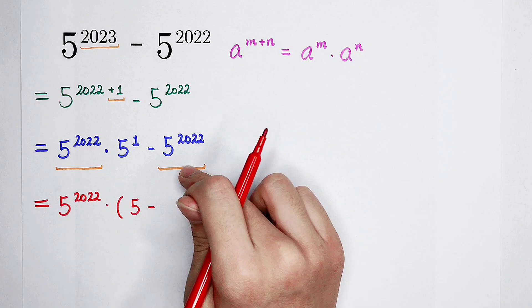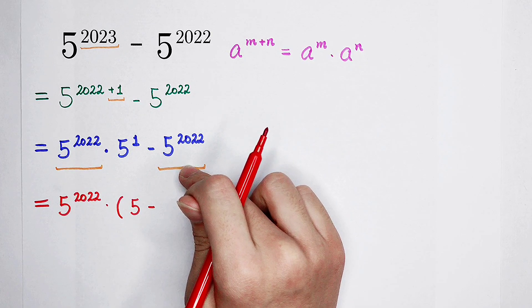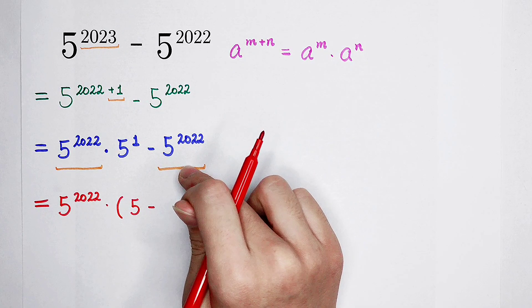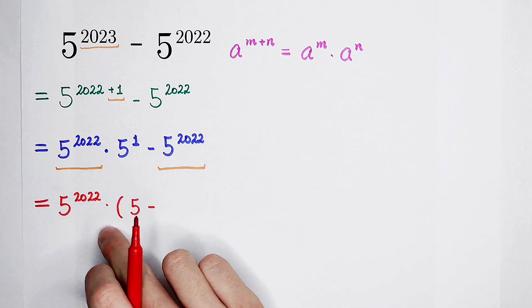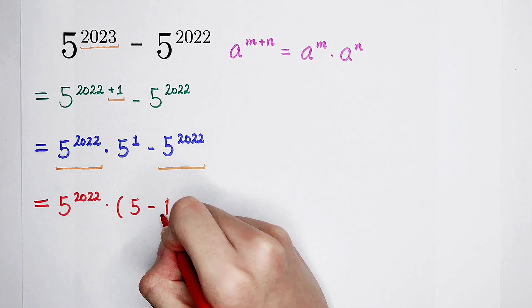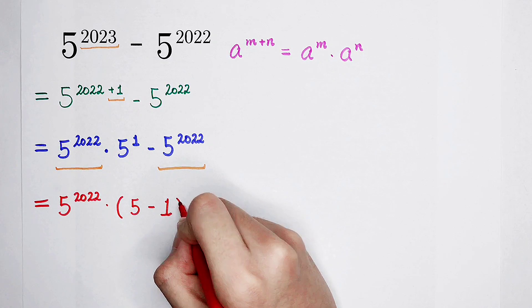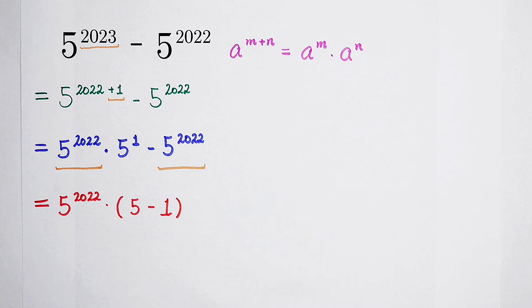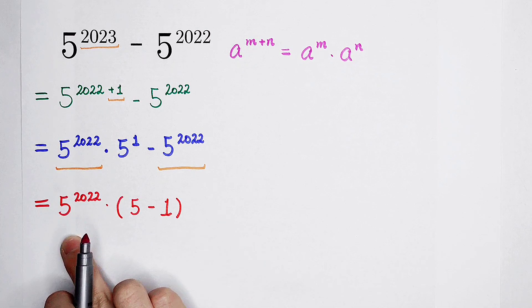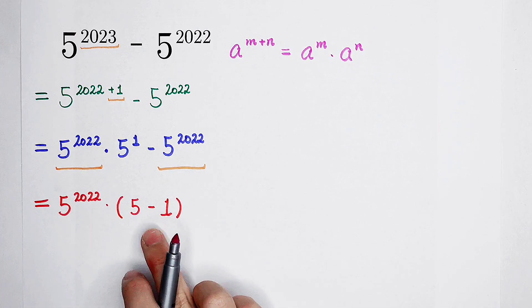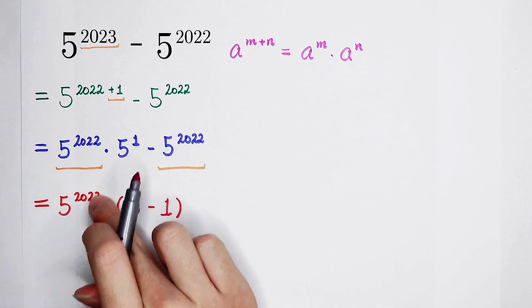So here, what's left? Of course, 5 to the power of 2022 divided by 5 to the power of 2022, it is 1, because any number divided by itself is always 1. So now, it is equal to 5 to the power of 2022 times 5 minus 1. Here, bracket.